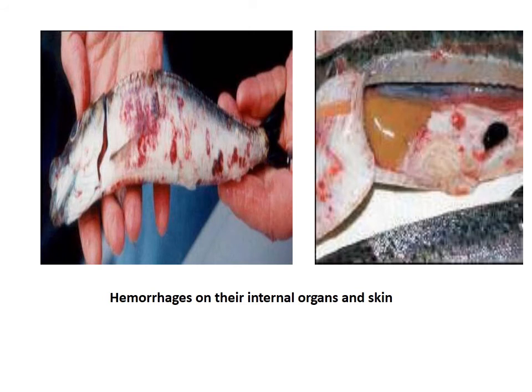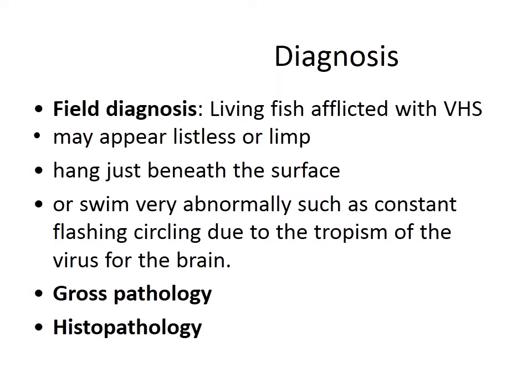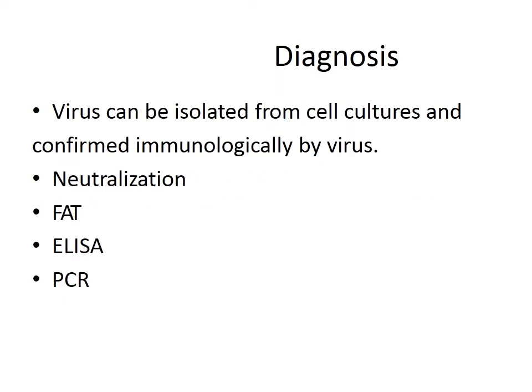A reddish tint is present as a result of hemorrhage. Living fish afflicted with VHS may appear listless or limp, hang just beneath the surface, or swim very abnormally such as constant flashing or circling, due to the tropism of the virus for the brain.